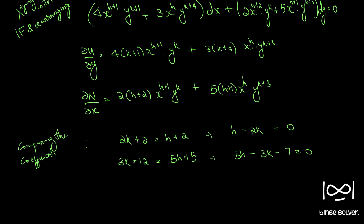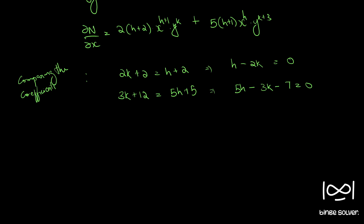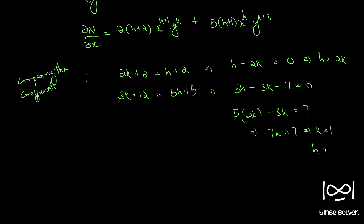From the first equation, h = 2k. Substituting into the second equation: 5(2k) − 3k = 7, so 10k − 3k = 7, giving 7k = 7, therefore k = 1 and h = 2. So our integrating factor is x^2 · y.